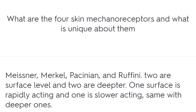What are the four skin mechanoreceptors and what is unique about them? Meissner, Merkel, Pacinian, and Ruffini. Two are surface level and two are deeper. One surface receptor is rapidly adapting and one is slower adapting. Same with the deeper ones.